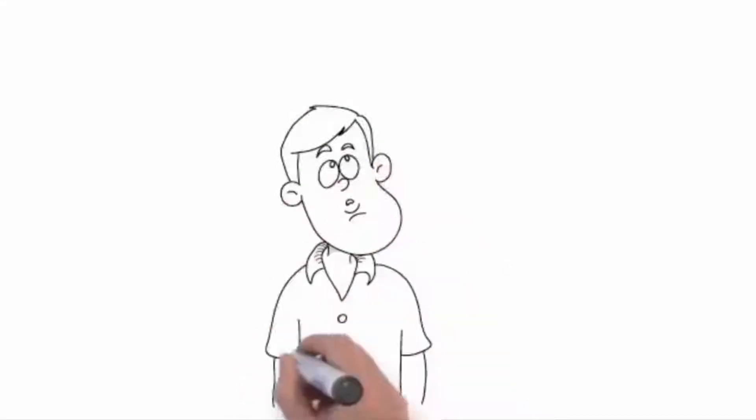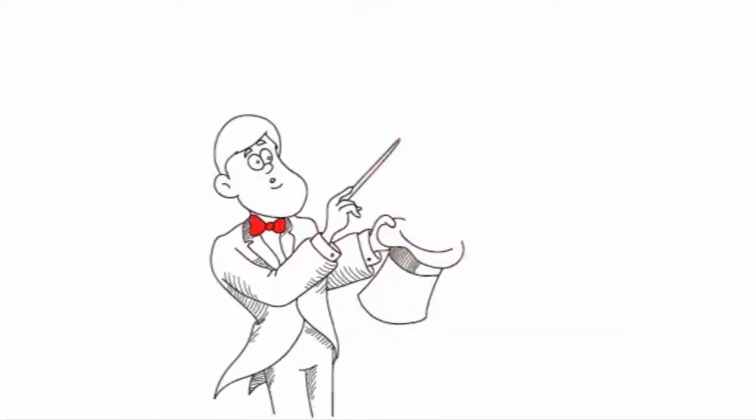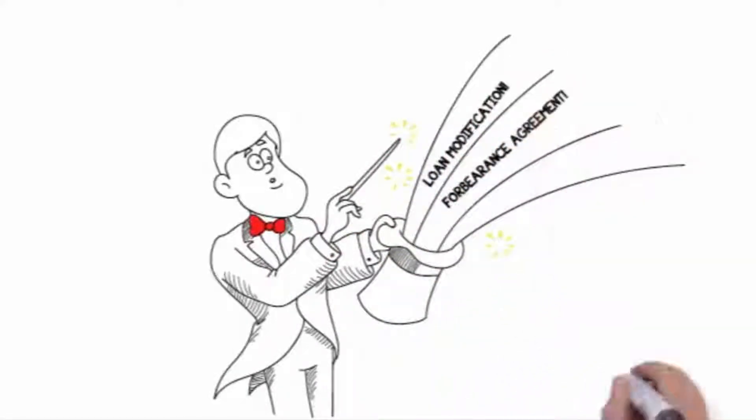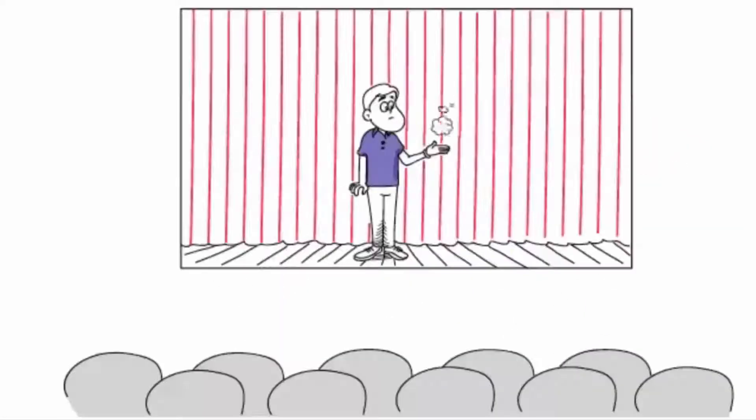Maybe you've tried to solve your foreclosure problem on your own, and the powers that be keep throwing terms at you and expecting you to magically fix the problem. Loan modification, forbearance agreement, reinstatement, deficiency judgment, what the heck does it all mean?